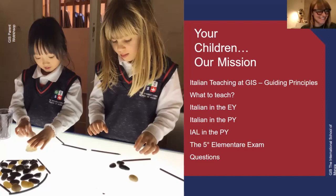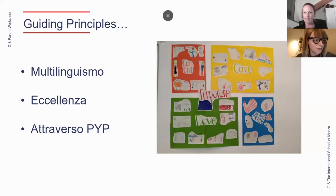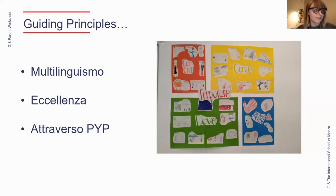So here we go with our presentation on our GIS approach to Italian. Eccoci con la nostra presentazione sul nostro approccio GIS all'italiano. Quindi partiamo dai principi che guidano la nostra scuola e anche ovviamente l'insegnamento della lingua italiana. Ciò che è importante per noi è proporre una prospettiva multiculturale e multilinguistica che si approccia al mondo della conoscenza in modo open-minded. La lingua è sicuramente un aspetto caratterizzante della cultura di appartenenza e la sua padronanza può aprire le porte al mondo della conoscenza, della letteratura e della creatività.